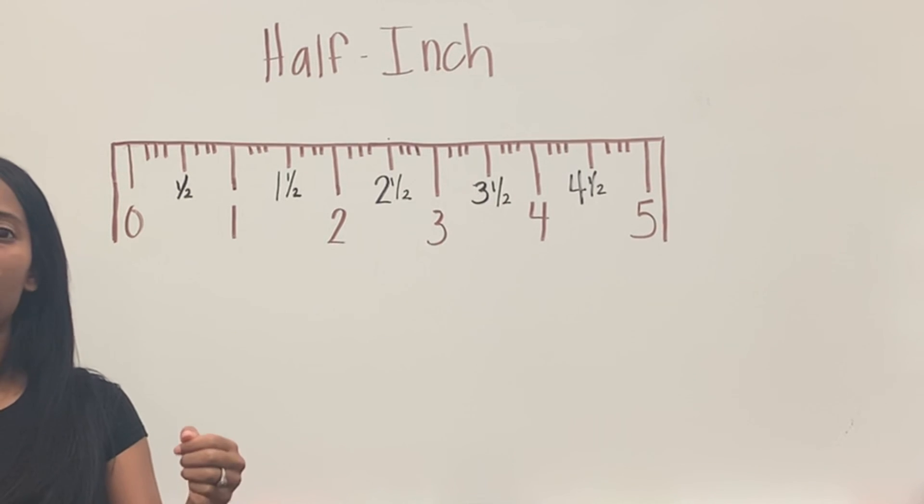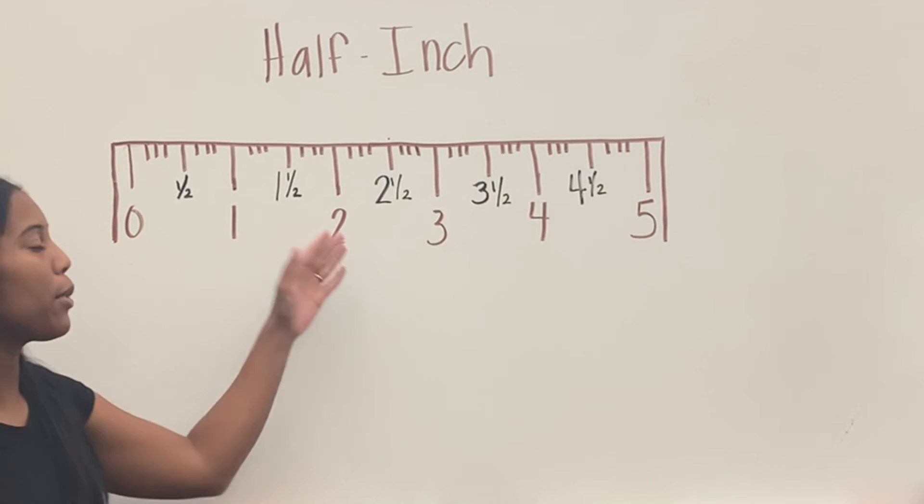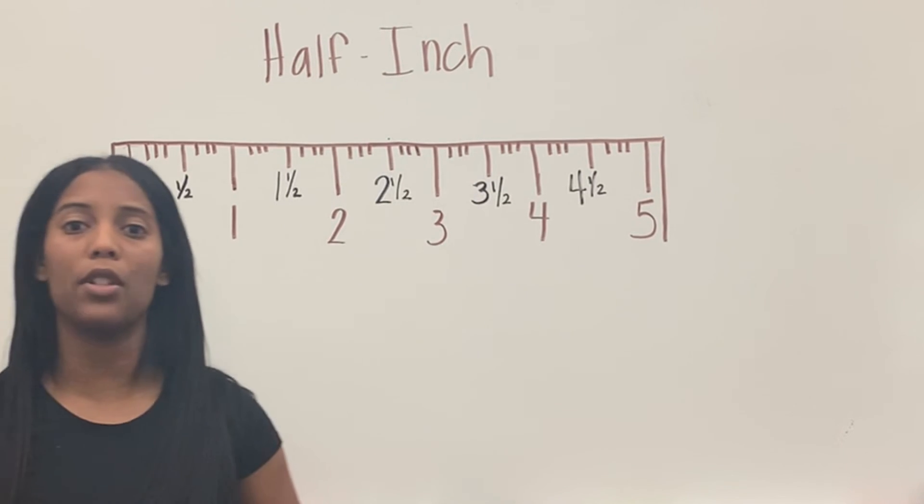You can do that in your workbook today, practicing, and you'll see the lines will stop halfway. Just make sure that you pay attention to the numbers so that you can write it correctly. So that's your math lesson 72.